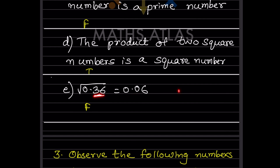For 0.36: its square root should be 0.6, not 0.06. When we have two decimal digits under the square root, we get one decimal digit in the result, so √0.36 = 0.6, not 0.06. Therefore the statement that √0.36 = 0.06 is false.